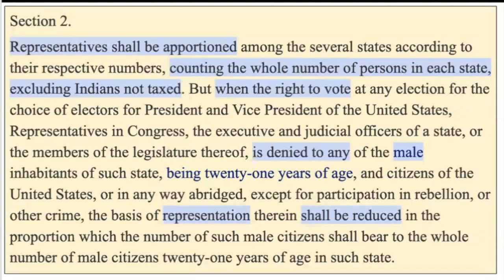Section 2 basically says that if a state restricts the right to vote, it will get fewer representatives in Congress. Representatives shall be apportioned, counting the whole number of persons in each state, excluding Indians not taxed. When the right to vote is denied any male, representation shall be reduced.